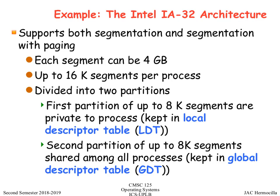In Intel, each segment can be up to 4 gigabytes. We have the segment register and the limit register. The maximum size of a segment for 32-bit is 4GB because the limit register is 32-bit. There can be up to 16,000 segments per process, divided into two partitions: the LDT (local descriptor table) and the GDT (global descriptor table). We showed an example earlier of how the GDT is set up in our tutorial.